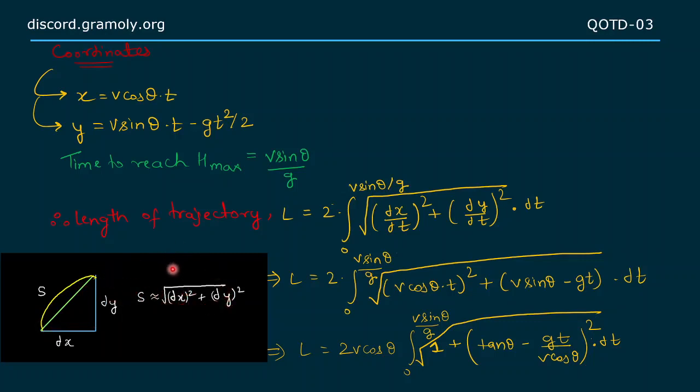Applying this theory to find the length of the trajectory, we can do it as: length of trajectory equals 2 times the root under (dx/dt)² plus (dy/dt)² times dt, integrating from 0 to v sin θ by g.